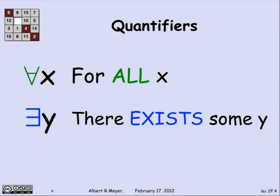Now, the quantifiers are read as for all and exists, but they control a variable. So I write upside down A x and I read it as for all x. And backwards E y is read as there exists some y.